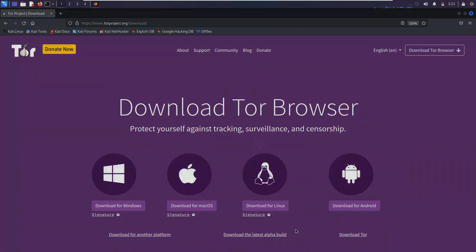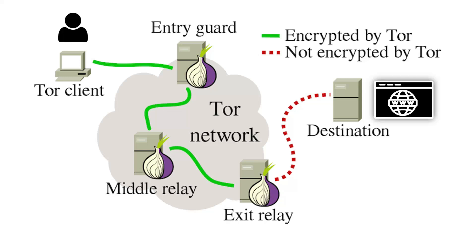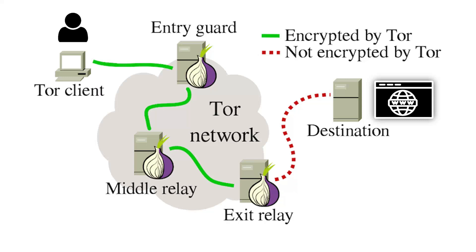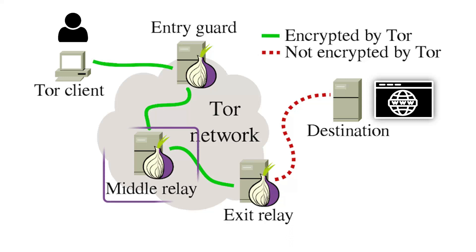First, let's take a quick moment to understand how it works. Suppose that you are the user accessing a website — your traffic, along with your IP address, is completely encrypted and sent through multiple Tor nodes spread across the globe. Even if someone tries to trace you, they can only get to the point where the exit node was. There could be multiple middle nodes, which makes it impossible for anyone to trace you back. Let's get into action.